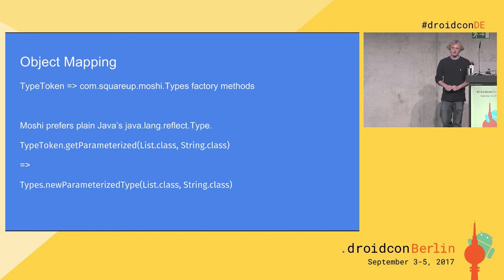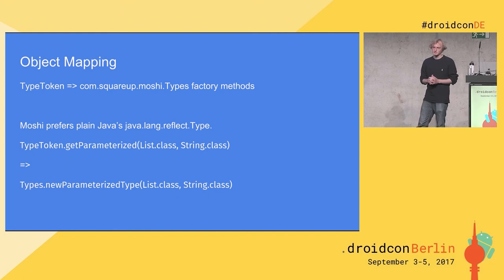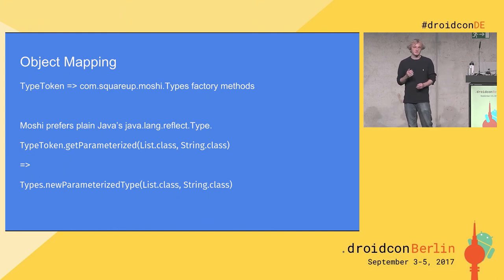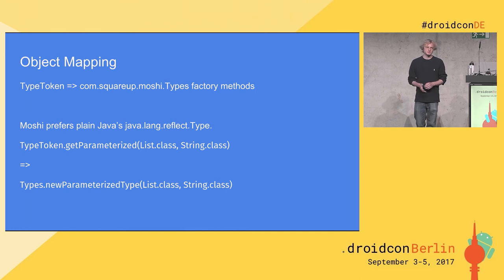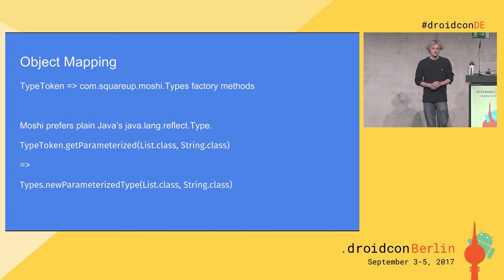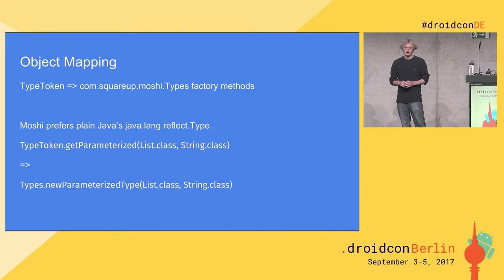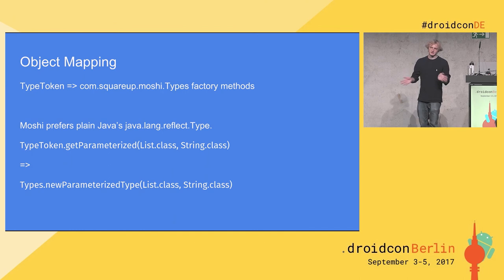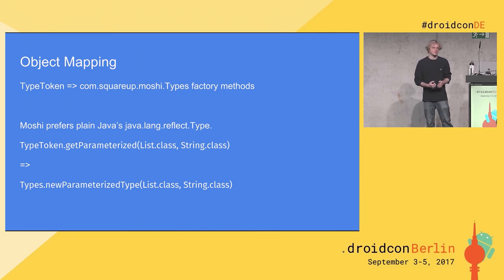There's also no more TypeToken API, which is really nice. Moshi tends to prefer normal Java types you already know. You actually end up using java.lang.reflect.Type more than TypeToken. Instead of subclassing TypeToken and doing weird things, there's actually a Types factory class in Moshi — a public API with all sorts of niceties. Basically everything you had in TypeToken, you use the Types API to just create normal Java types. For example, a list of strings just returns a normal java.lang.reflect.Type.